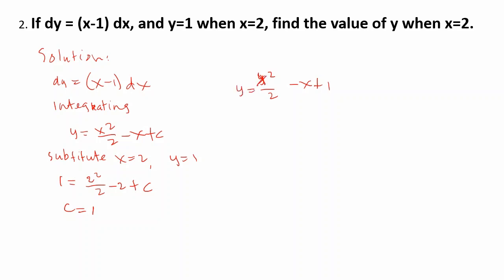So y equals x squared over 2 minus x plus 1. When x equals 4, solving gives y equals 4 squared over 2 minus 4 plus 1, so y equals 5.